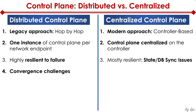Distributed control plane, however, has some convergence challenges. For example, if we have 10 routers in our environment, nine may come up okay, but one older router may have issues converging because of maybe some IOS bugs or some challenges with the hardware itself. When it comes to centralized control plane, the convergence is much better because the control plane is located on the controller.